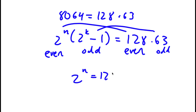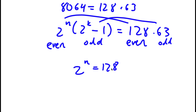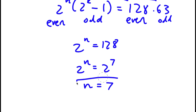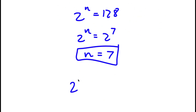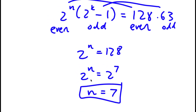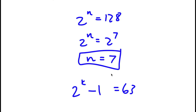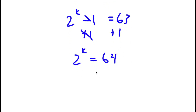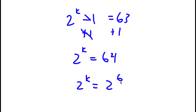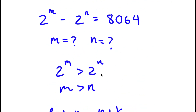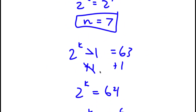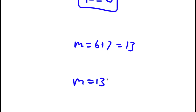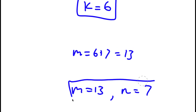So 2 to the power of n equals 128. Since 128 equals 2 to the power of 7, we get n equals 7. And 2 to the power of k minus 1 equals 63. Adding 1 to both sides gives 2 to the power of k equals 64, and since 64 equals 2 to the power of 6, k equals 6. Since m equals n plus k, we have m equals 7 plus 6, which is 13. So m equals 13 and n equals 7.